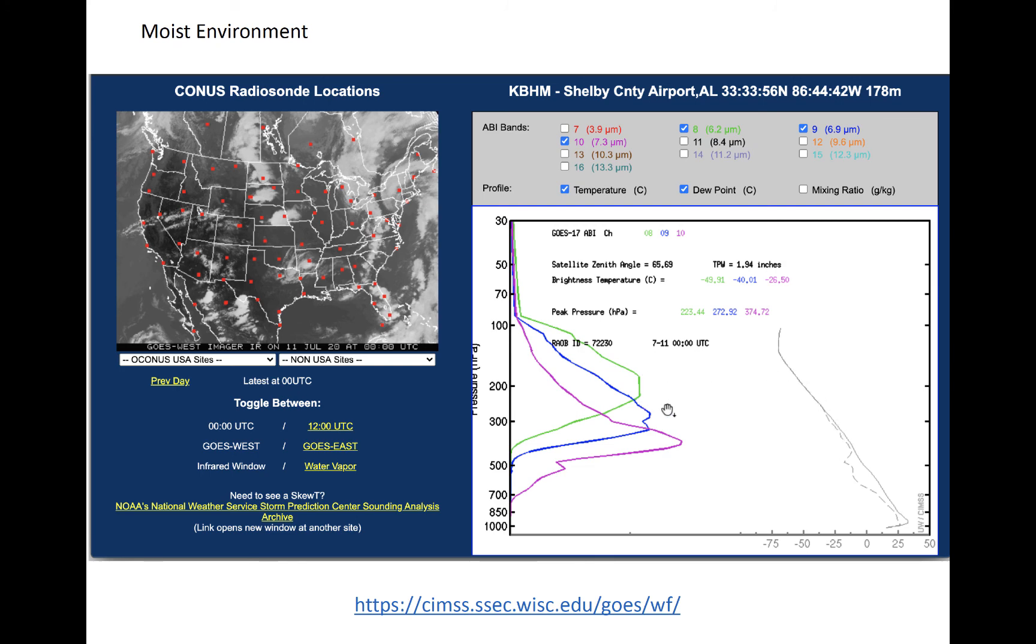The green, blue, and purple lines denote the weighting functions for GOES bands 8, 9, and 10 at this location. Band 8 has a maximum near 200 millibars, while band 10 has a maximum closer to 400 millibars. However, band 10 detects some radiation from as low as 700 millibars. Band 8 detects no radiation below 400 millibars. The weighting function for band 9 sits between the two.